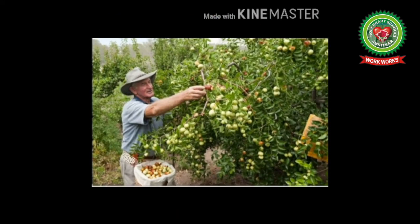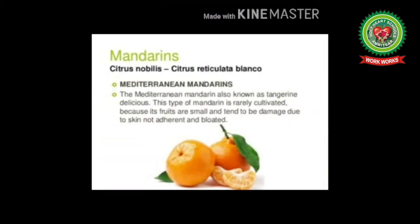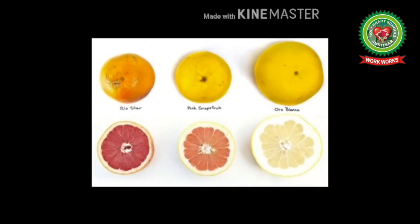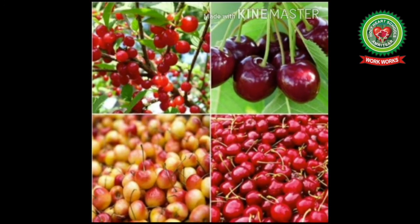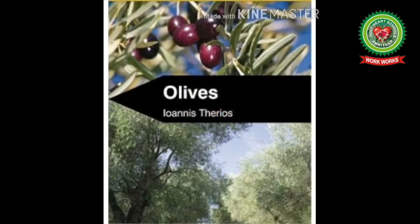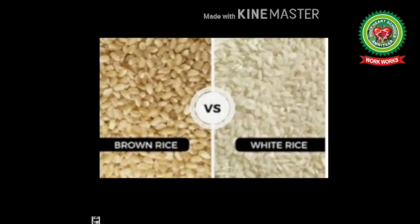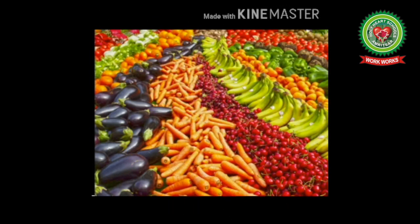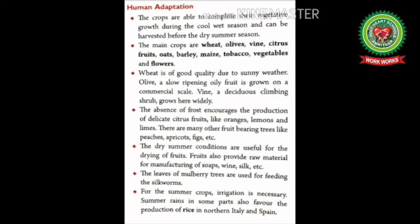Mediterranean regions are called the world's orchard lands. Nearly 70 percent of the world's exports of citrus fruits — which are juicy and rich in Vitamin C — including oranges, lemons, limes, and grapefruit — are produced in these regions. Other important fruits are peaches, pears, plums, apricots, and cherries. Olive oil is used in place of butter and cooking oil in the diet. Intensive agriculture is practiced with the help of irrigation; rice, sweet potatoes, maize, flowers, and vegetables are grown in this region.